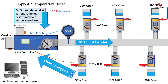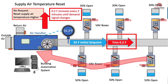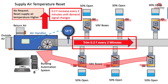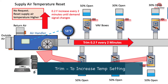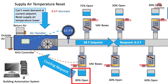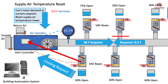For example, if no request is made, the supply air temperature is reset 0.2 degrees Fahrenheit, which would move the setpoint to 55.2 degrees. Every two minutes, or whatever duration is set by the controls programmer, the trimming of the supply air temperature will occur until a request is made from a zone. The VAV zone boxes can be programmed to make a request when any VAV box damper reaches 90% open. When the request is sent, the supply air temperature will respond by decreasing by a certain value chosen by the programmer.